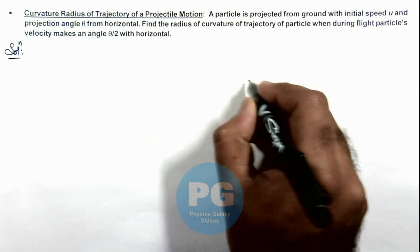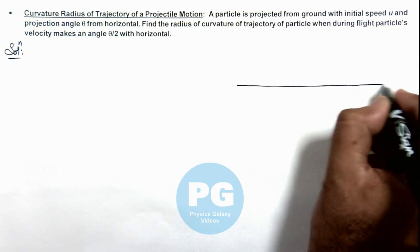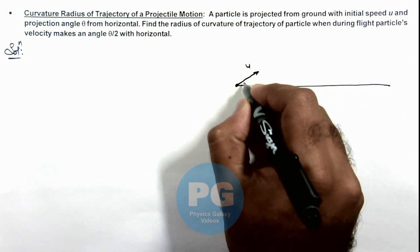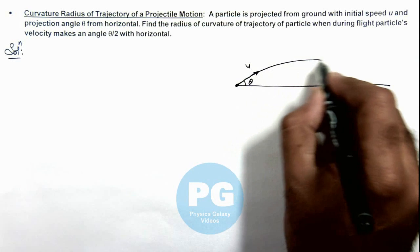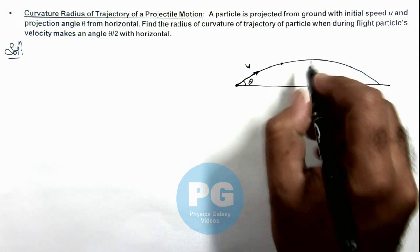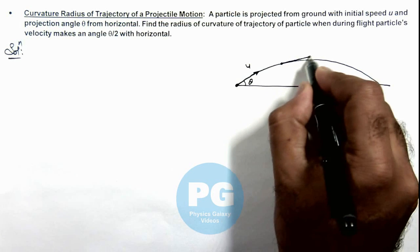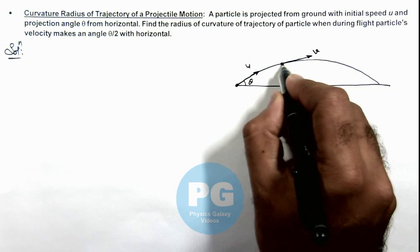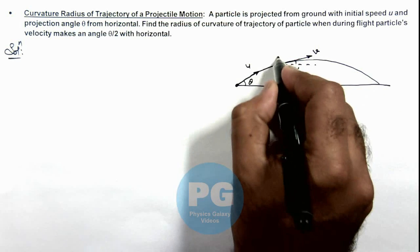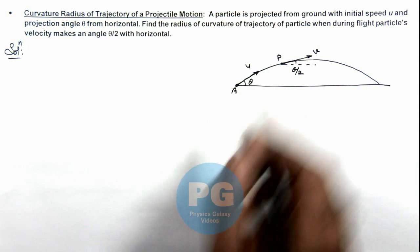If we have a look on the situation, from ground when a particle is projected with initial speed u at an angle θ, it follows the projectile trajectory. And at some point in its flight, if its speed is v, it is making an angle θ/2 with the horizontal. Say this point is P and starting point was A.